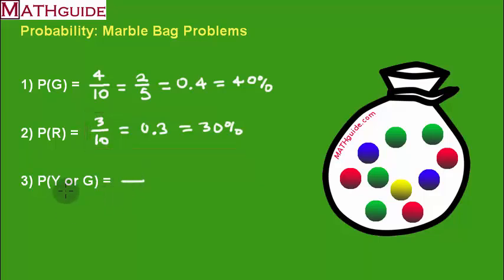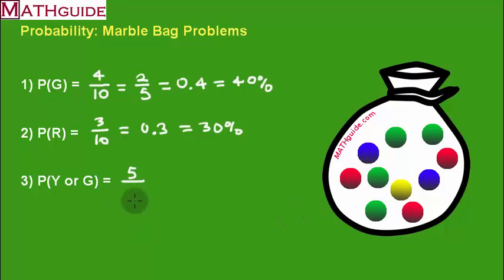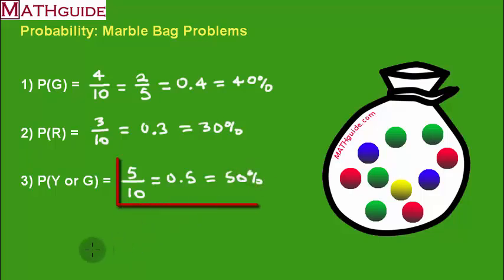What is the probability of choosing either yellow or green? There are 4 green and 1 yellow, which means there are 5 total favorable outcomes for choosing either green or yellow. So that's 5 out of 10 possible marbles, which equals 0.5 or 50%. There's a 50% chance of choosing either yellow or green.